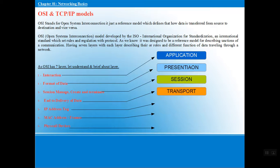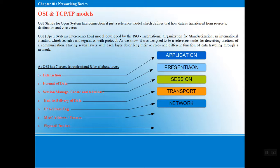Next is the Transport layer, which plays a major role in the OSI model. It provides end-to-end delivery of your data and packets, giving assurance that your data has been transmitted and reached the intended destination. This end-to-end delivery is the core function of the Transport layer.